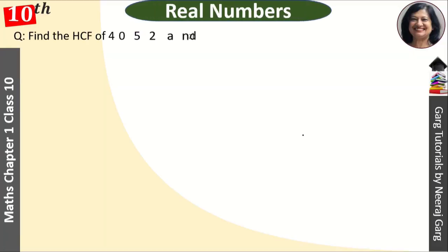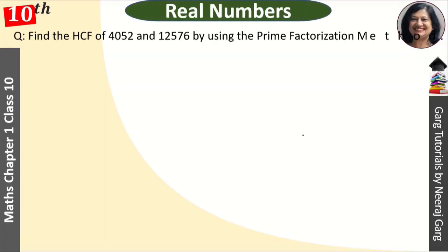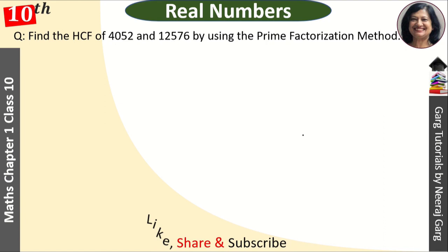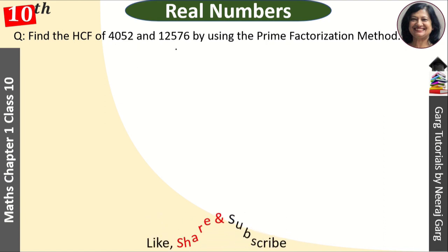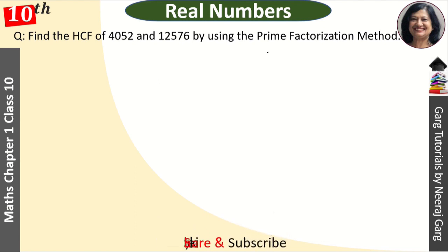Hi, this is Neeraj Garg and you are watching Class 10th Chapter 1 Real Numbers. Find the HCF of 4052 and 12576 by using the prime factorization method. First, we will do the prime factorization of 4052 and 12576.